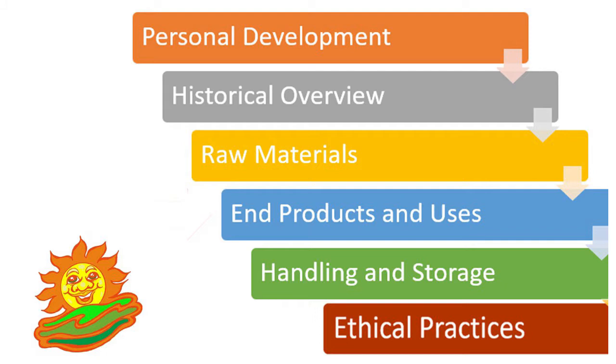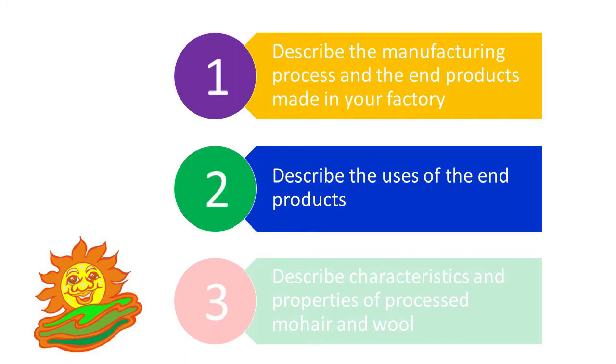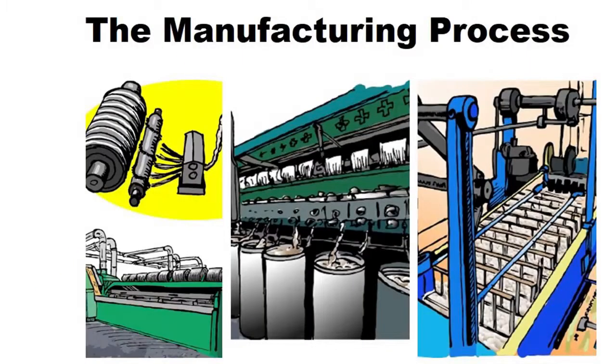In Section B, you learned about the raw materials used in the manufacturing process. In this section, Section C, you will consider the end products produced in your factory. After completing this section, you will be able to describe the manufacturing process and the end products made in your factory, describe the uses of the end products in terms of customer requirements, and describe characteristics and properties of processed mohair and wool.